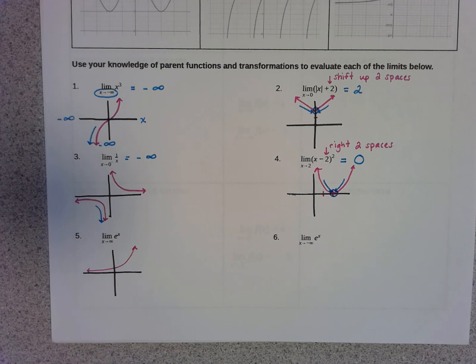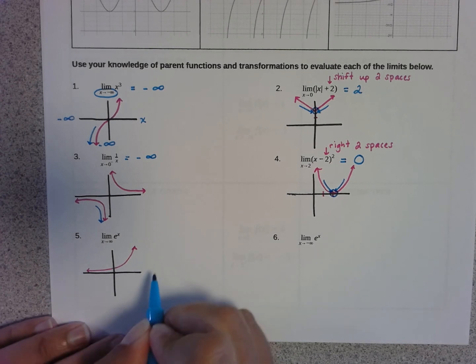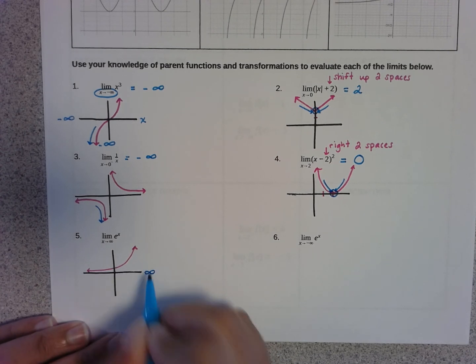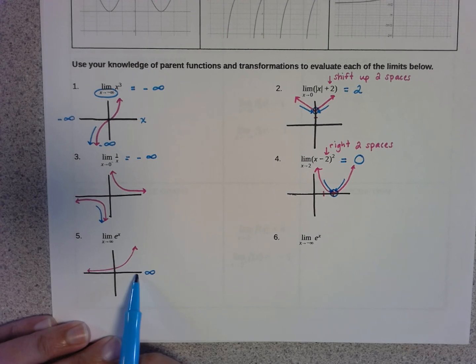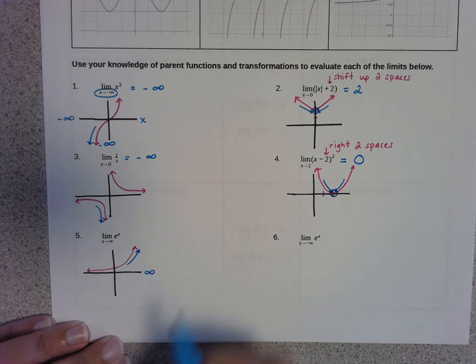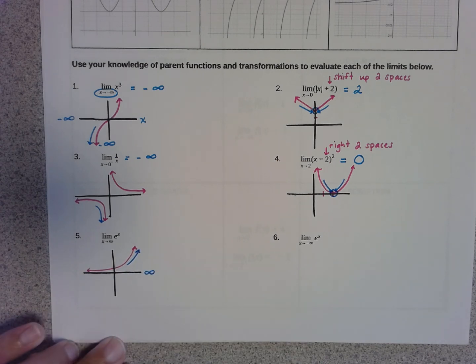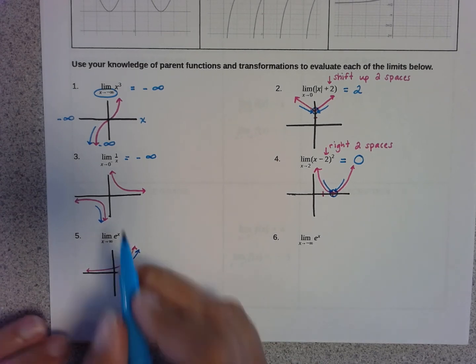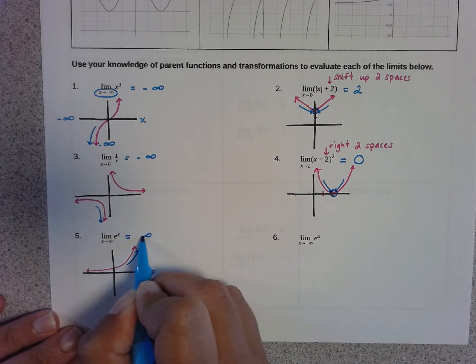If I ask you to evaluate the limit as x approaches infinity, we need to remember that on the graph, infinity on the x-axis just means go to the right as far as you can imagine. As I follow this graph to the right, I'm also going to be going up, which means the y values are approaching infinity.